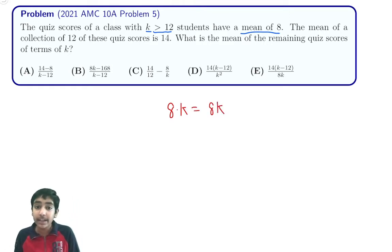Because 8 on average, 8 times k is 8k total points for the whole class. But now we know that 12 of these students got an average of 14. So if 12 of these students got an average of 14, combined the 12 students got 12 times 14.